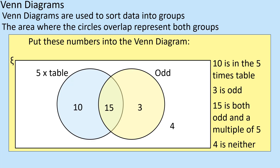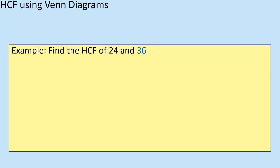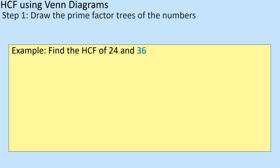So that's how you put it together — you've just got two criteria, or maybe three, but it tends to be two, and your overlap is what fits both, and then the bits that don't fit go outside. So if you're looking for a highest common factor using Venn diagrams — and this is a bit of a skill — then what you're going to do is draw a prime factor tree.